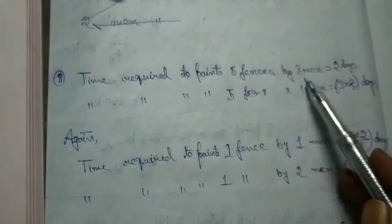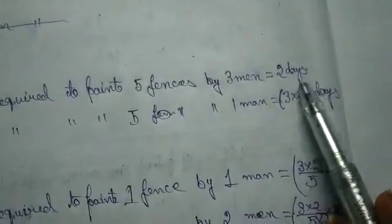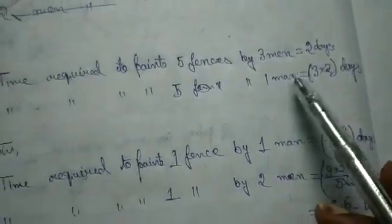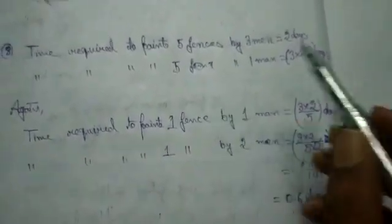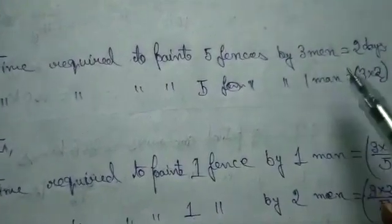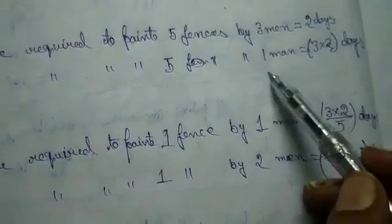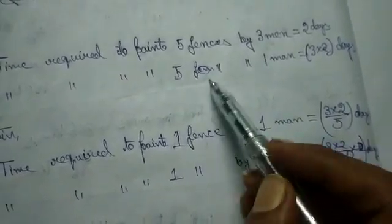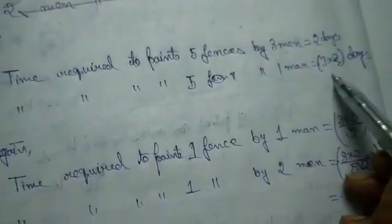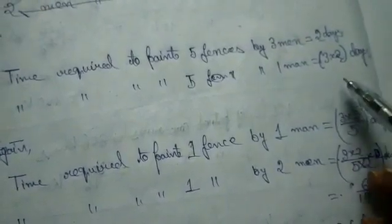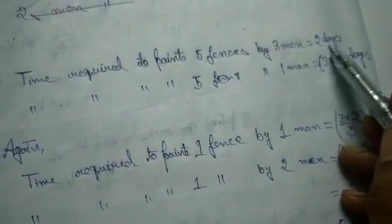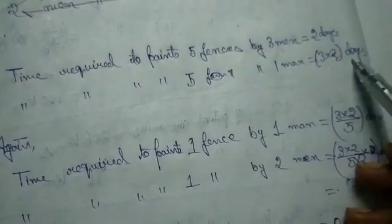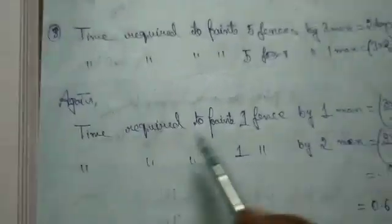Time required to paint five fences by three men is two days. Now we have to calculate: how much time will it take one man to complete five fences? It is 3×2. Since one man is working instead of three, the number of days will be greater. Earlier it took two days; here it will take 3×2, that is six days.